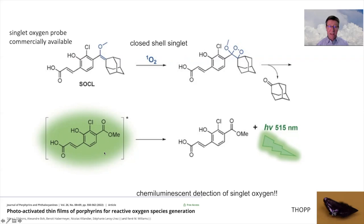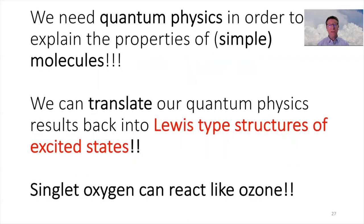So it is a chemiluminescent detection of singlet oxygen. So in that way you can correlate quantum physics and molecular orbital schemes and you can make a translation back into Lewis structures that are maybe more easy to interpret and certainly easier to correlate to the properties.